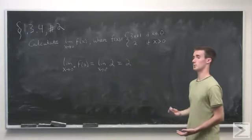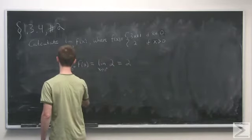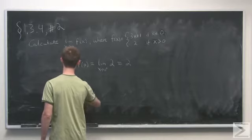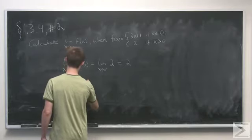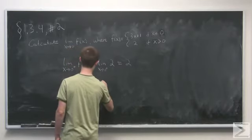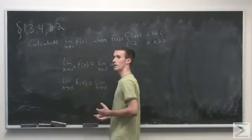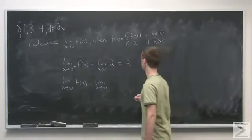So now we look at what happens when we come at it from the left. So we have the limit as x approaches zero from the left of f of x. Well, if we're coming at it from the left, we're going to be less than zero, so our function is going to be 3x plus 1.